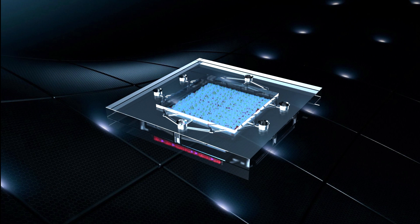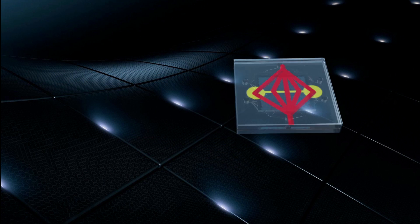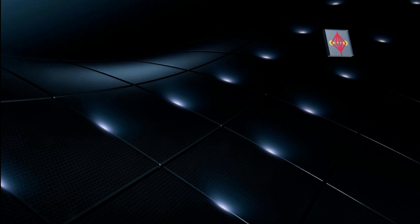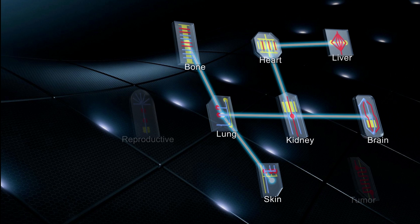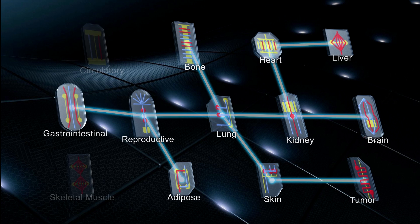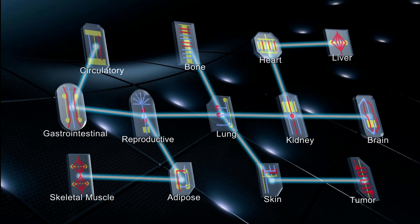By connecting chips that represent various organs into a full human body system, scientists may better understand how the whole body responds to drugs, and if they're safe and effective. For example, chips that include additional factors such as hormones could help researchers investigate differences between male and female responses to drugs.